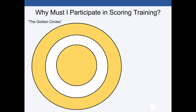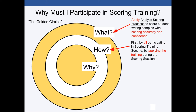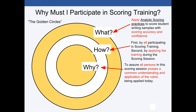Simon Sinek uses a graphic called the golden circles to identify the purpose and why of what we must do. He uses three question words — what, how, and why — to best describe what's happening. He says that many times we know what we need to do and we know how to do it, but we never truly understand why. The what is: we're going to score student writing samples with accuracy and confidence. The how is: you'll participate in scoring training then apply it to an actual scoring session. The why is: to ensure all scorers have a common understanding of the rubric so that student scores accurately reflect what students know and are able to do.